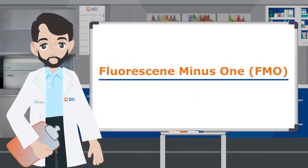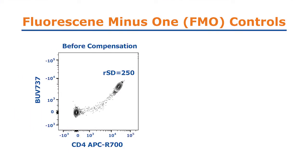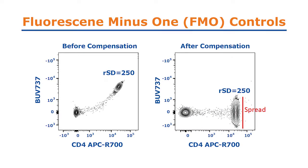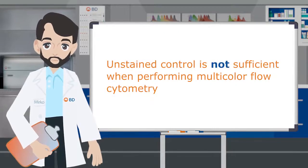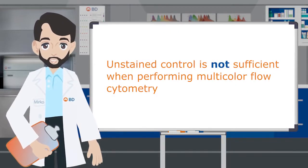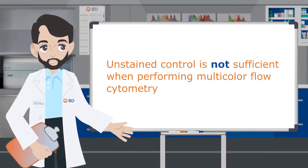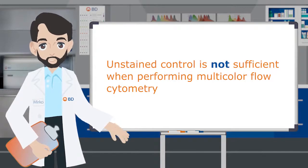Fluorescence minus one controls. While compensation corrects for non-specific signal into a secondary detector, it does not eliminate the background spread resulting from spillover. For this reason, an unstained control is not sufficient when performing multicolored flow cytometry, as this does not take into account the background spread introduced by other fluorochromes present in the panel.